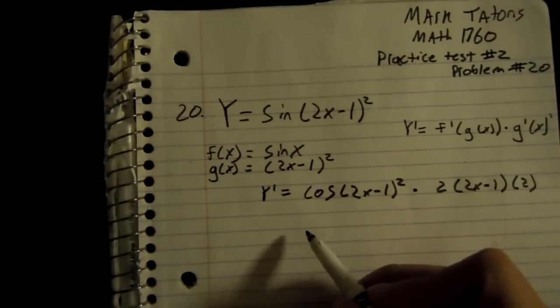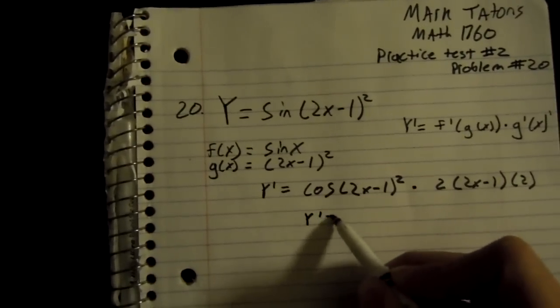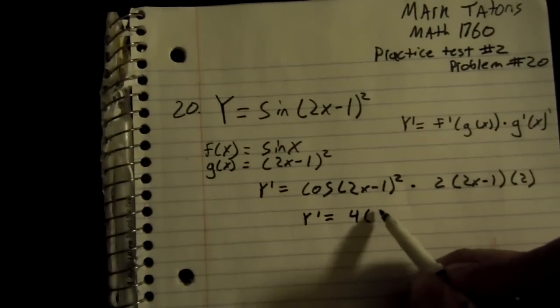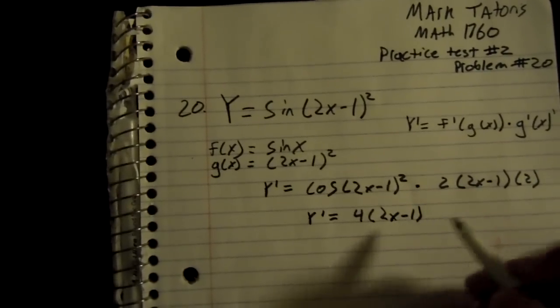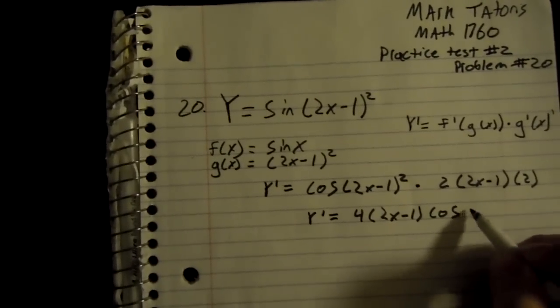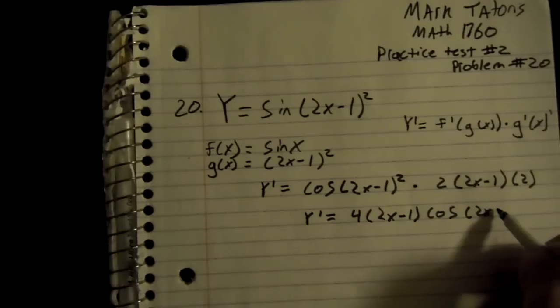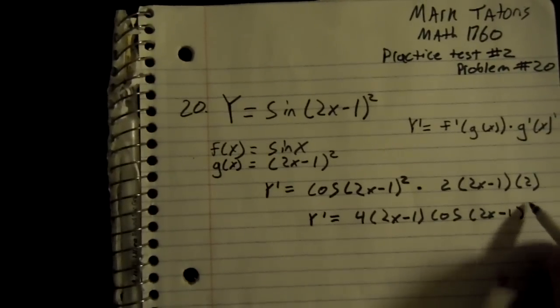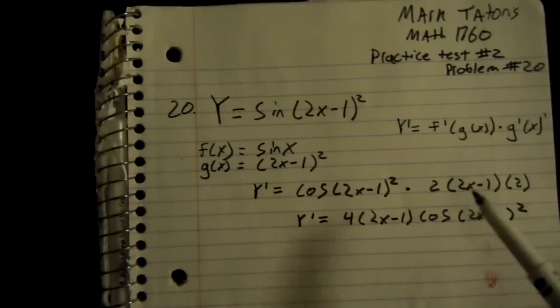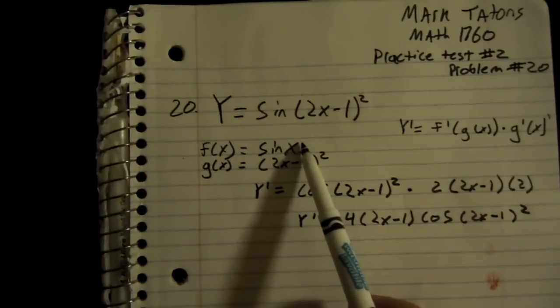And that comes out to be 4 times 2x minus 1 times cosine of 2x minus 1 squared, which is the derivative of sine of 2x minus 1 squared.